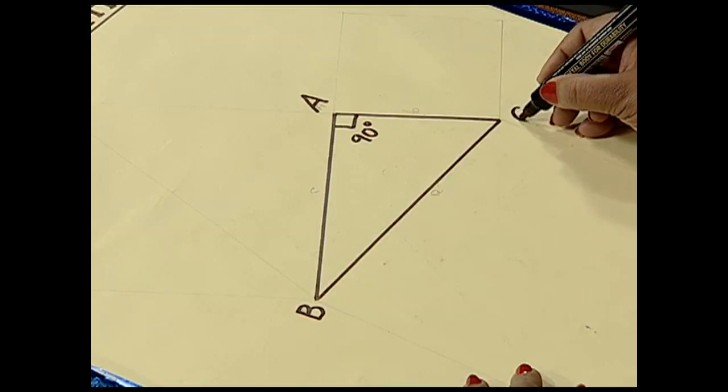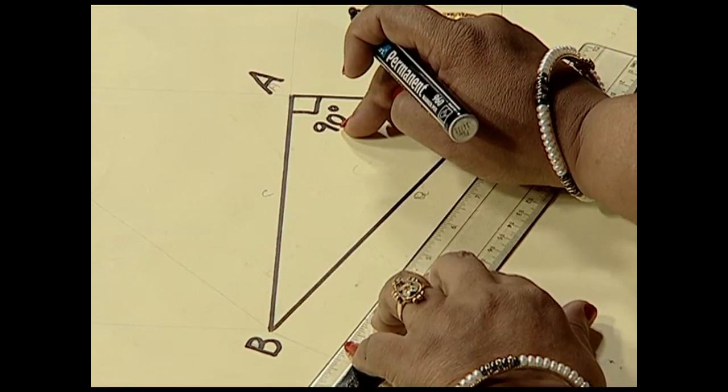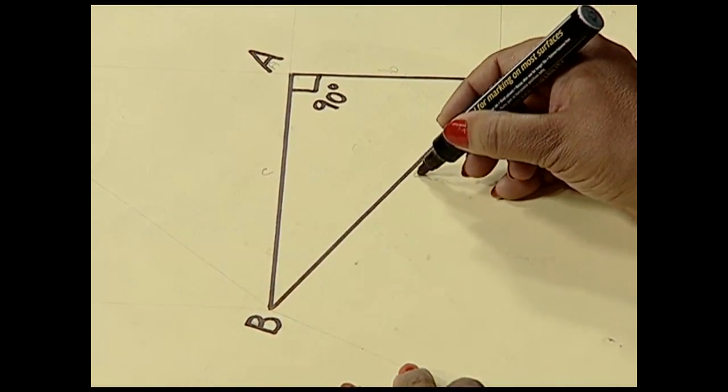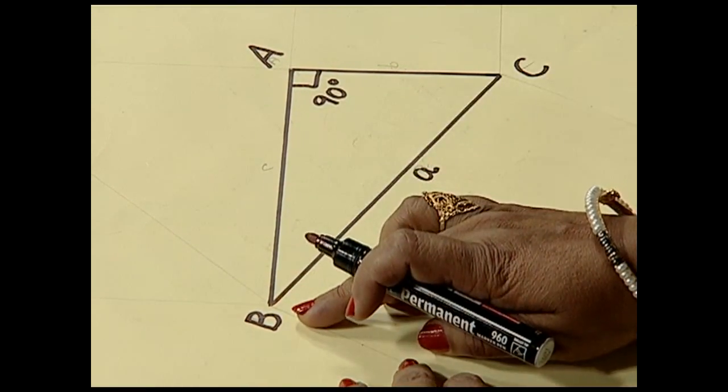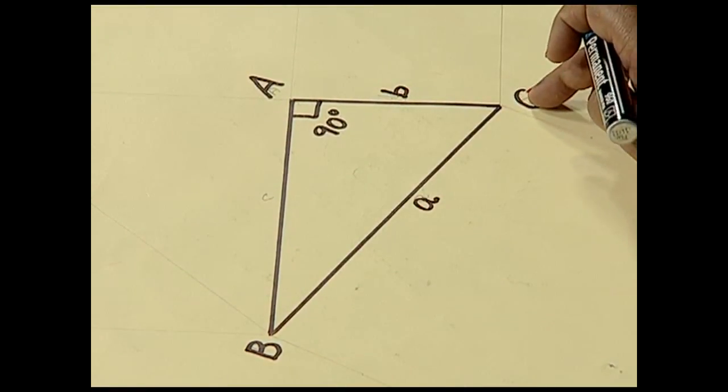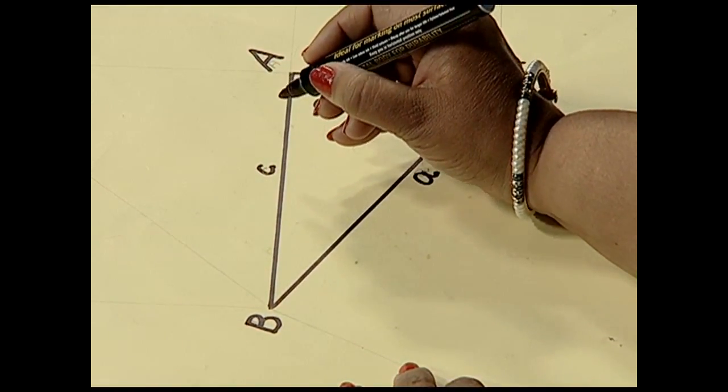Now to verify the Pythagoras theorem, we need squares on the sides of the triangle ABC. We denote the side opposite to angle A as small a, the side opposite to angle B as small b, and the side opposite to angle C as small c. In order to verify our result, we need squares of the sides.